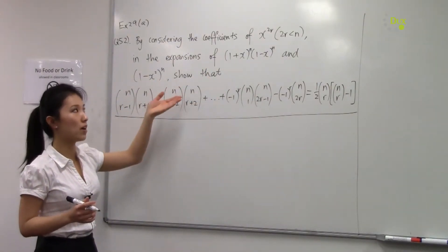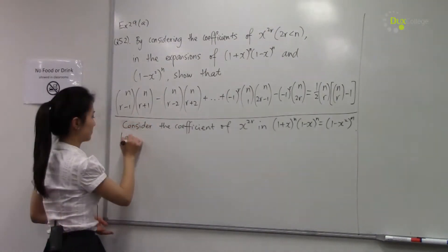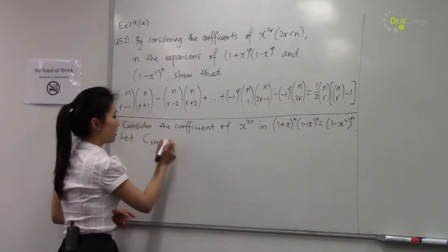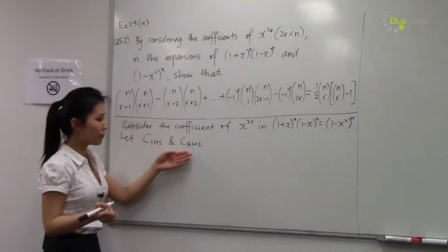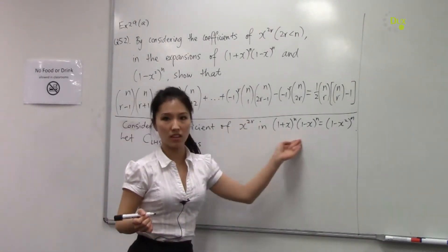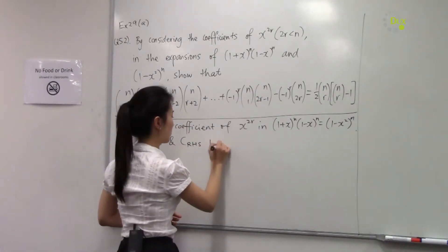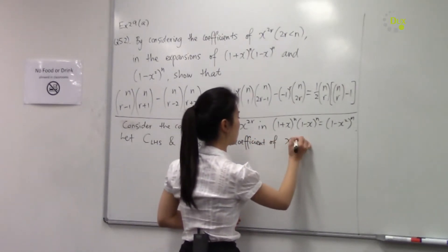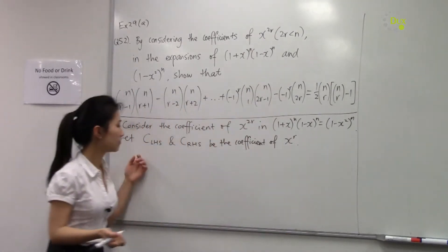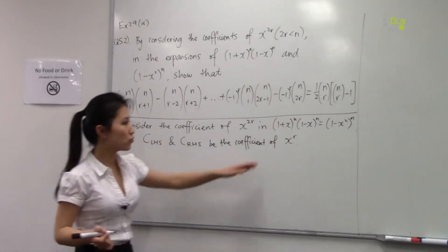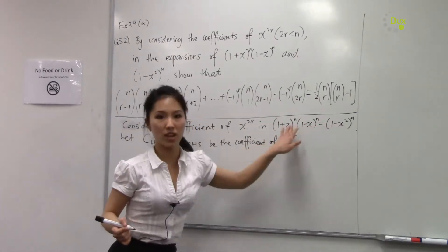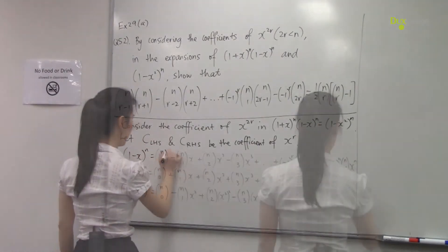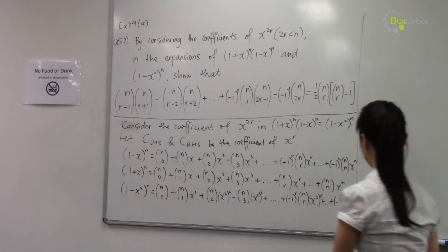Notice they're exactly the same — it's just a different way of writing it. We let the left-hand side coefficient and right-hand side coefficient both represent the coefficient of x to the power of 2r in this expression. The next step is to actually expand all three of these things individually.